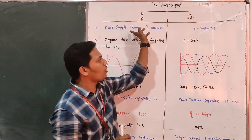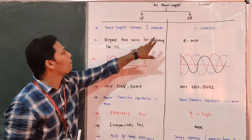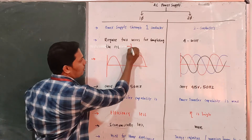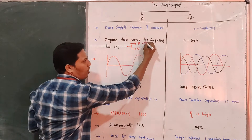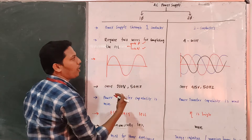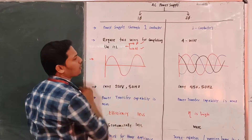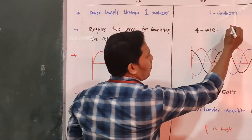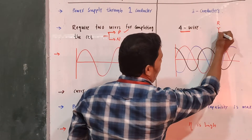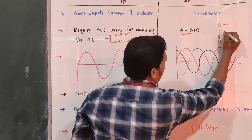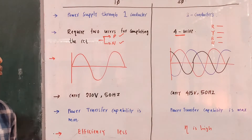So here it is one phase and this is three phase. It requires two wires for completing the circuit — one phase wire and another is a neutral wire. So phase is one wire, neutral is one wire, total wires is two. But in the case of a three phase system, four wires are required: R, Y, B, and N. R, Y, B are the three phase conductors and one is neutral, so the total four wires are required.